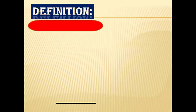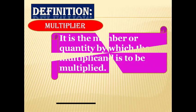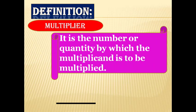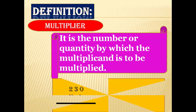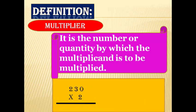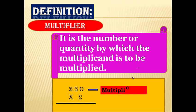Definition of multiplier: It is the number or quantity by which the multiplicand is to be multiplied. In this example, 230 is the multiplicand and 2 is the multiplier.